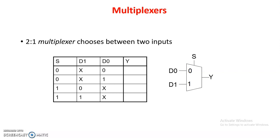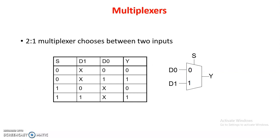D1 and D0 are the two inputs. With two inputs, one select line is needed — the power of 2 indicates the number of select lines. So one select line and one output are there. This is the truth table of the 2-to-1 multiplexer. When S is 0, whatever D0 is applied comes to the output regardless of D1. If D0 is 0 then output is 0; if D0 is 1 then output is 1.